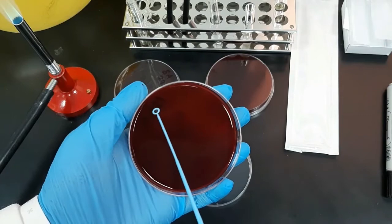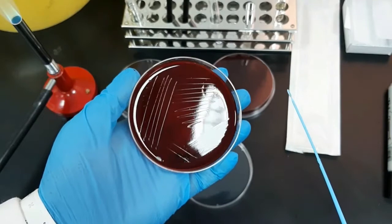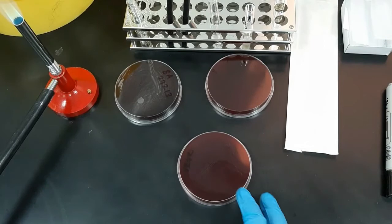Then turn the plate at 90 degrees and streak only one or two times into the next quadrant without overlapping the previous streaks. Again turn the plate 90 degrees and make more streaks by pulling out from quadrant two, and repeat the streaking procedure in quadrant four or in the remaining part of the plate.